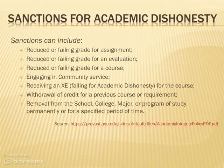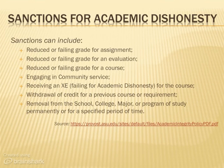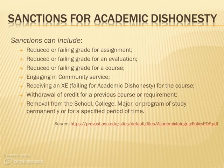There are several consequences to violations of academic integrity or being academically dishonest. These sanctions include a reduced or failing grade for an assignment, a reduced or failing grade for an evaluation, a reduced or failing grade for a course. You may be asked to engage in community service. For an extreme offense, you may receive an XE on your transcript. Other consequences could include withdrawal of credit for a previous course or requirement if you had falsified documents and it was later found out, or removal from a school, college, major, or program of study permanently.